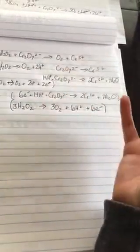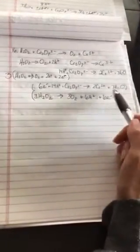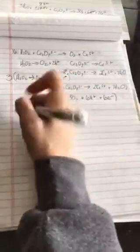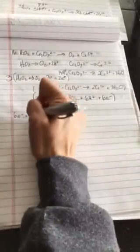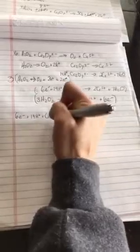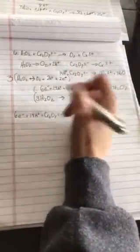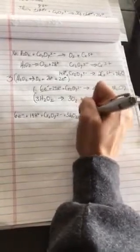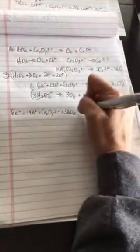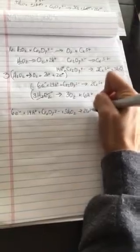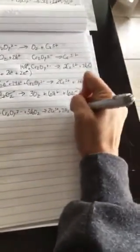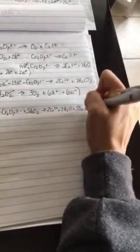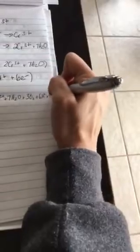Once you have your electrons balanced, you're going to combine the reactions back together. So everything that's on either of the reactant side will all go on one reactant side and everything that's on the product side will all go on one product side. So here we go. 6e- plus 14H+ plus Cr2O7 2-. Got that reactant side done. Let's do this. Plus 3H2O2. Produces 2Cr3+ plus 7H2O plus 3O2 plus 6H+ plus 6e-. Made it. Sorry, I think I was just showing you my child floor.